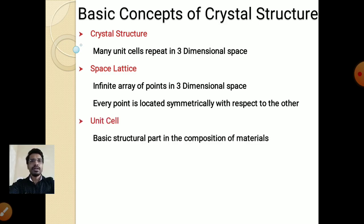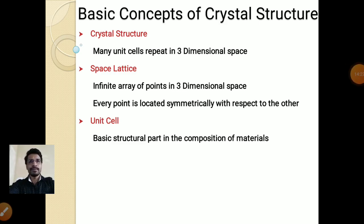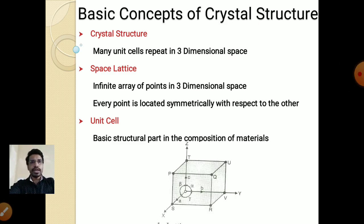A unit cell is the basic structural part in the composition of materials. For example, aluminum will have one crystal structure, and that crystal structure may have many unit cells. One such unit cell is the basic structural part. A unit cell looks like a cube with six sides, eight corners, and three axes — x, y, and z.